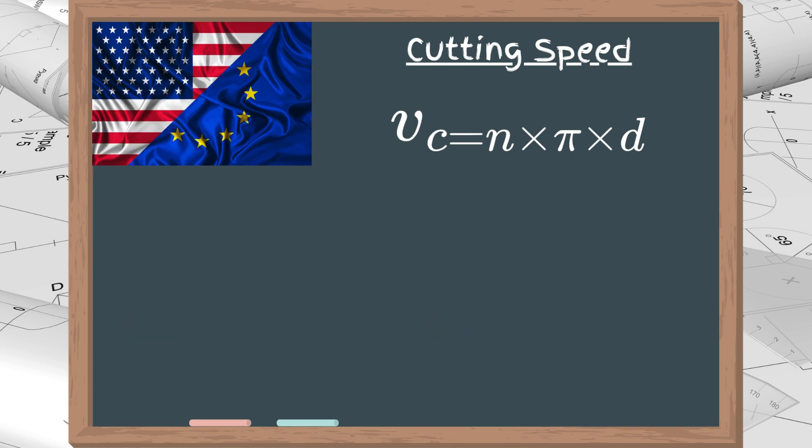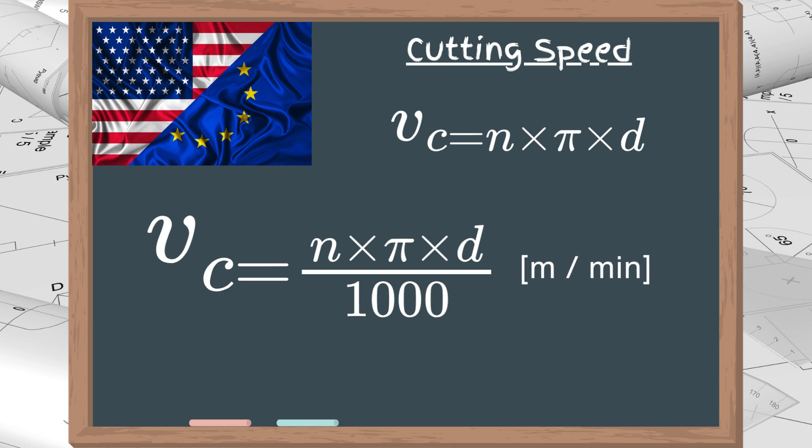Lastly, we have to factor the result to match the Vc units. So, to get the cutting speed in meters per minute, the final formula is n times pi times d divided by 1000. To get the result in SFM, you just need to swap the 1000 with 12.